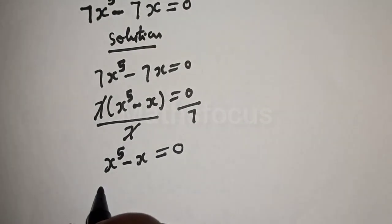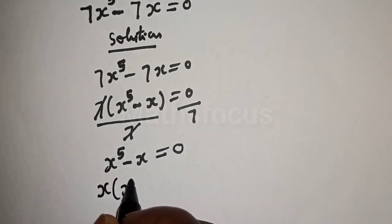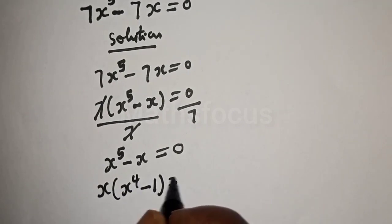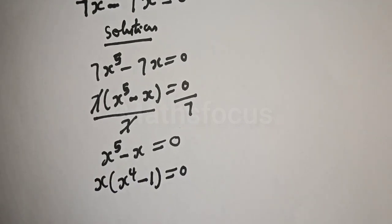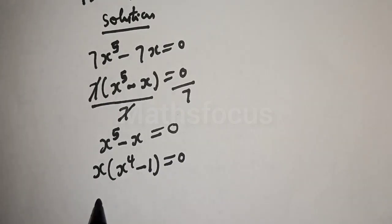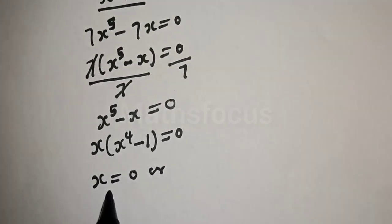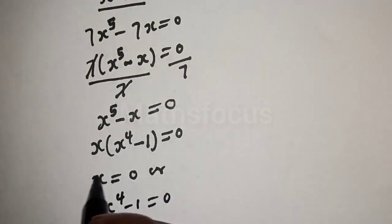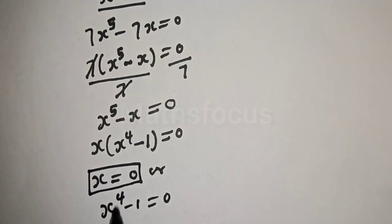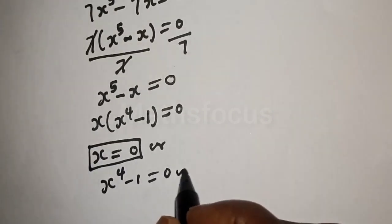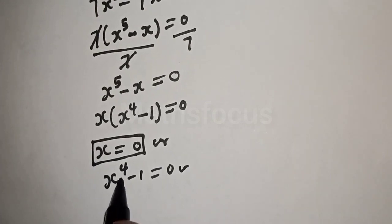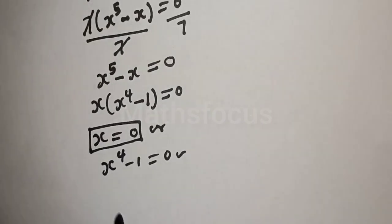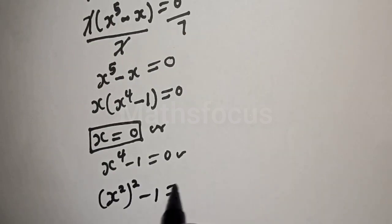From here, s is common again. Then we have s bracket s raised to the power 4 minus 1 is equal to 0. There are two cases here. The first case is s is equal to 0, or s raised to the power 4 minus 1 is equal to 0. This is the first value. Then let's solve from the second case: s raised to the power 4 minus 1 can be written as s squared squared minus 1 is equal to 0.